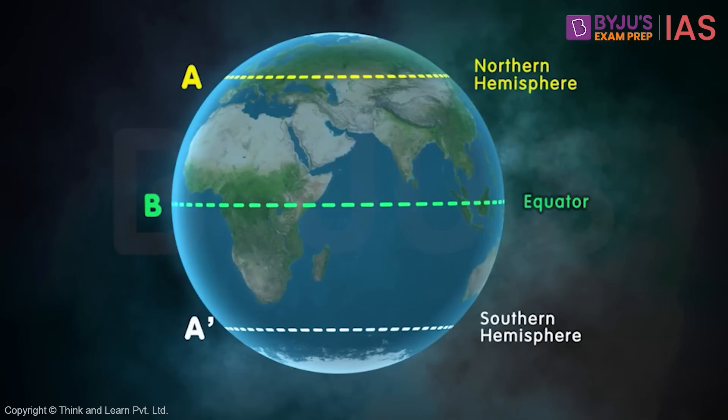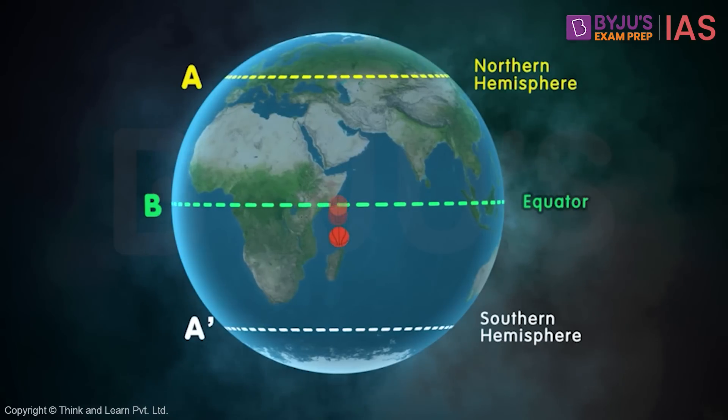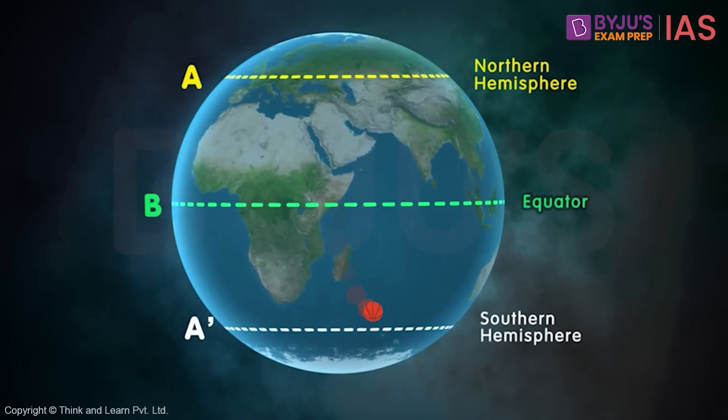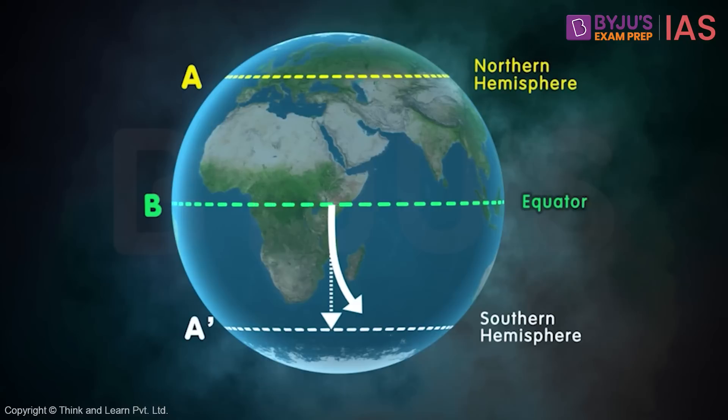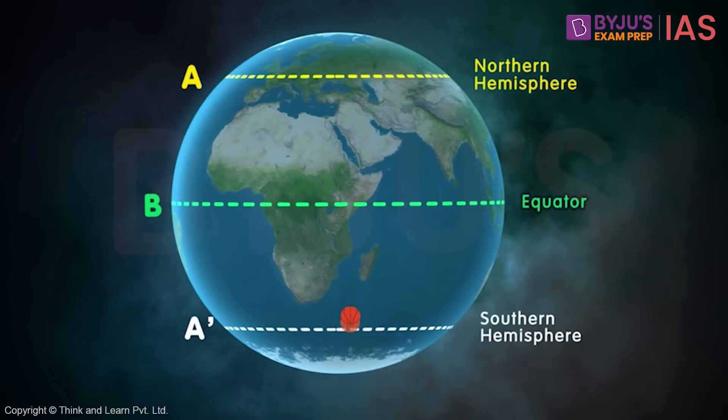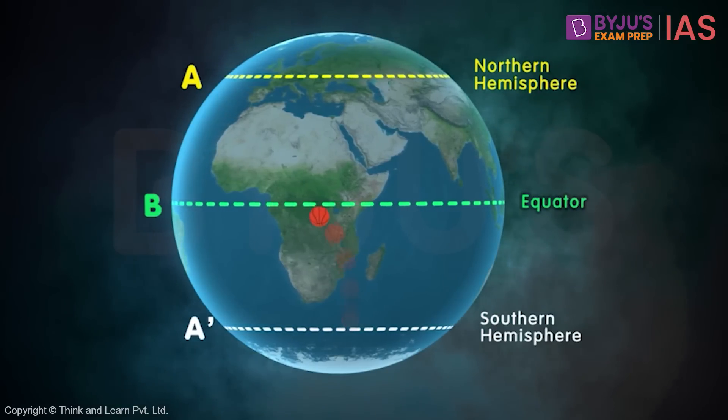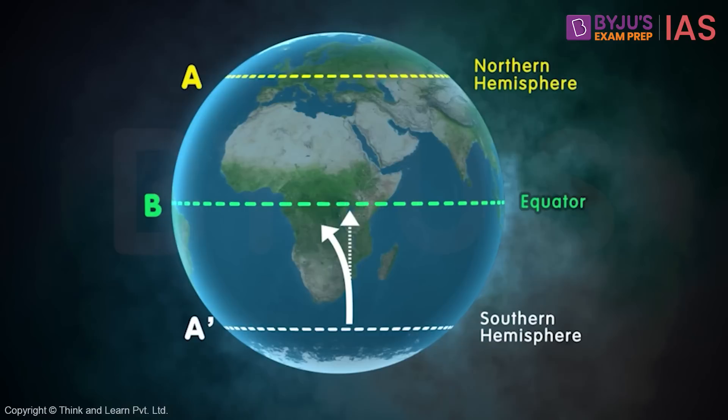Situation gets reversed when we consider the southern hemisphere. A ball thrown from the equator towards the southern hemisphere will appear to have taken a curved path towards its left. And if the ball is thrown from a point in the southern hemisphere towards the equator, still it will appear to have taken a path curved towards the left.